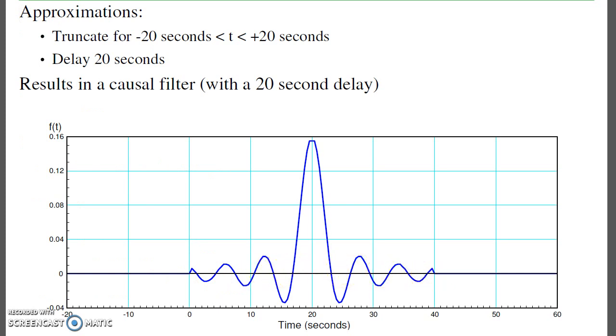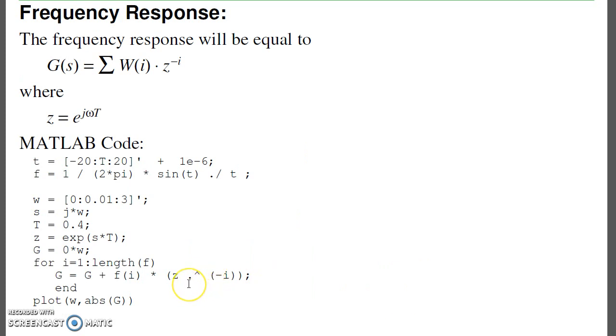That's 1 over z to the 2, z to the 3, z to the 4, where z is e to the st, and s is j omega. Add them all up, that's your gain versus frequency.